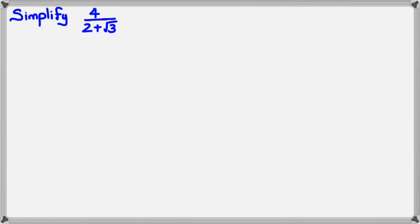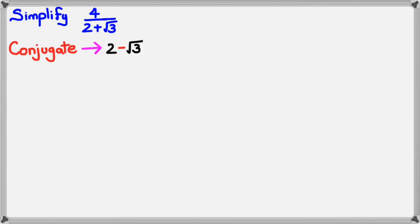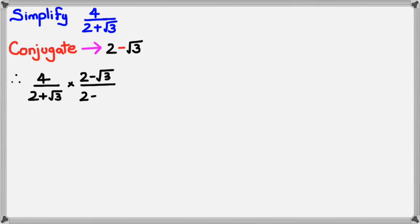Let's say we want to simplify the expression 4 divided by 2 plus square root of 3. The idea is we do not want a square root symbol in the denominator. So the first thing we're going to do is work out the conjugate for the denominator, which is 2 minus square root of 3. Then we multiply the fraction by that conjugate — 4 over (2 plus root 3) multiplied by (2 minus root 3) over (2 minus root 3) — because we're just multiplying by 1, so the value stays the same.